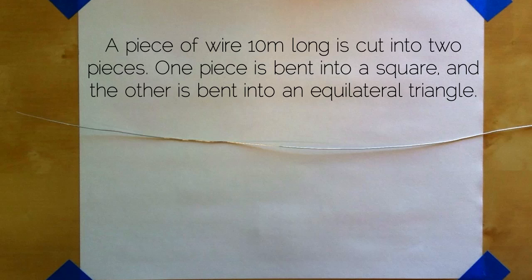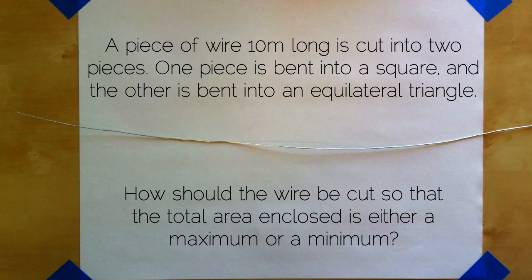A piece of wire 10 meters long is cut into two pieces. One piece is bent into a square, and the other is bent into an equilateral triangle. How should the wire be cut so that the total area enclosed is either a maximum or a minimum?